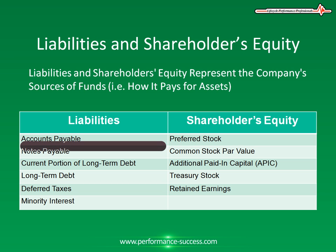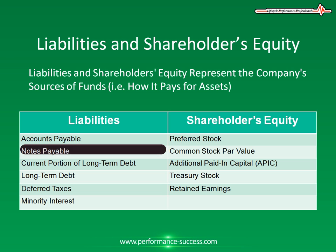Liabilities and Shareholders' Equity typically consist of, but are not always limited to, the following components. Accounts Payable: This is a company's obligations to suppliers for services and products already purchased from them but which have not been paid. It represents the company's unpaid bills to its suppliers for services obtained on credit from them.